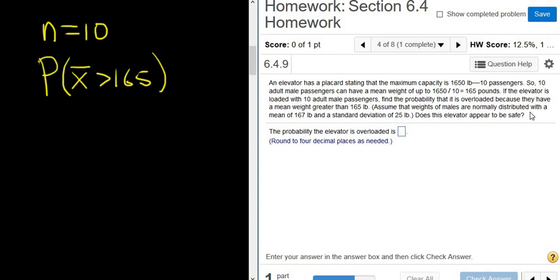Then it says, assume the weights of males are normally distributed with a mean of 167. That's going to be our mu. That's our population mean. And a standard deviation of 25. That's our sigma. And it says, does this elevator appear to be safe?